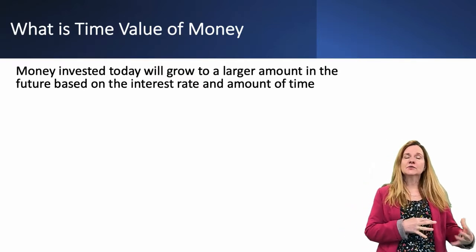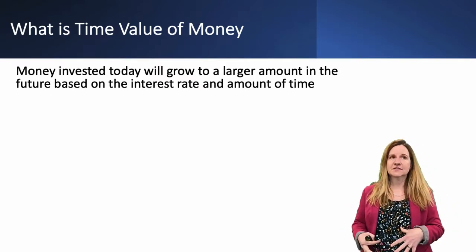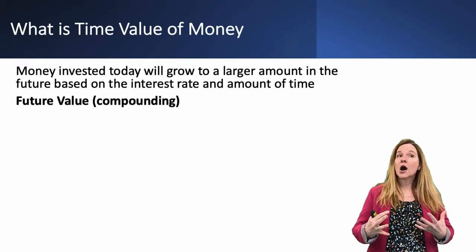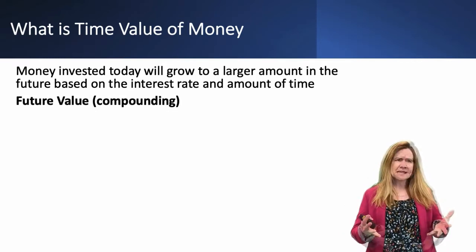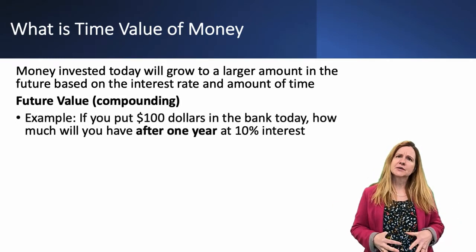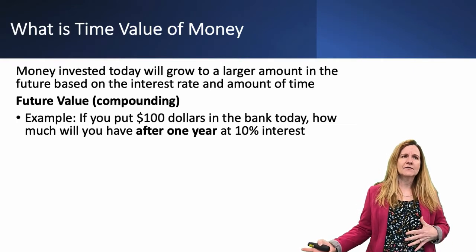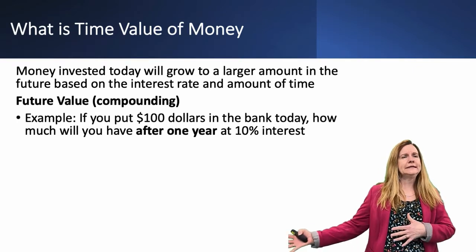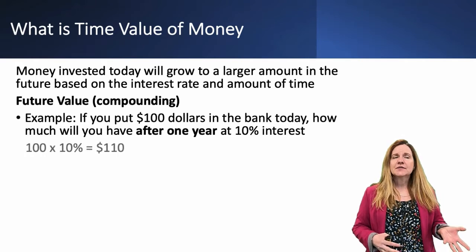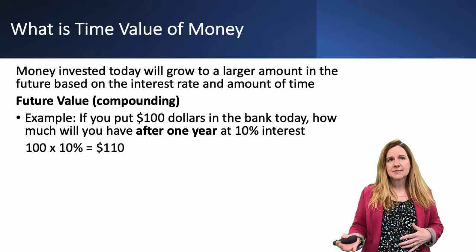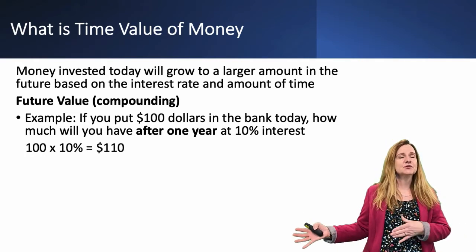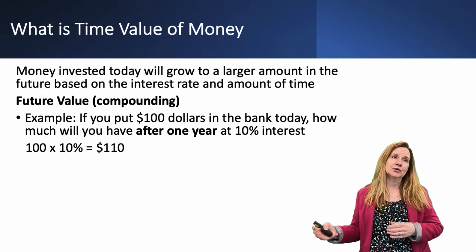So we have future value and present value. Future value we also call compounding. An example would be if you put $100 in the bank today, how much would you have after one year at a 10% interest rate? You just multiply the 100 times 10% and it's $110. That is the future value.